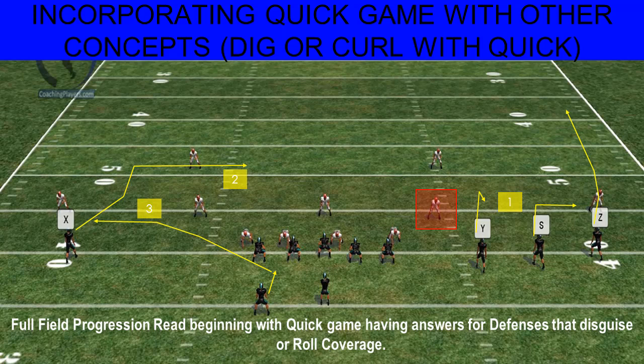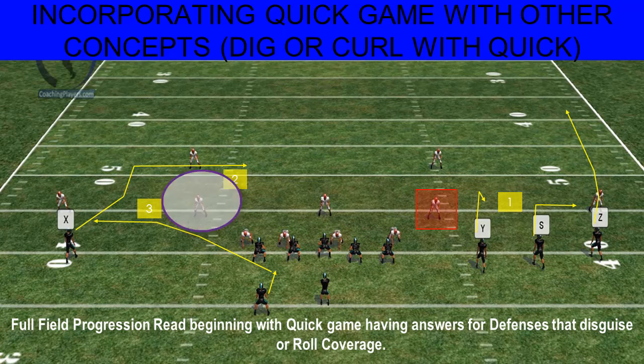Let's say they roll coverage at the snap. On the snap, he's creeping down, comes down and runs underneath number three. The quarterback just readjusts — we see with our eyes the guy's coming down and they're rolling coverage, so I reset my eyes to the other side, find the outside linebacker, and throw off him.